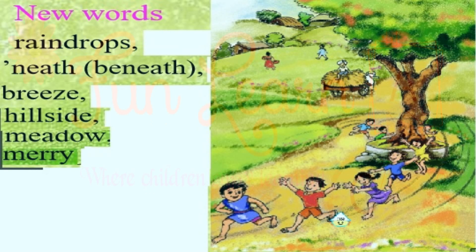New vocabulary words: 'beneath' means net or under; 'breeze' means thundi hawa (cool wind); 'hillside'; and 'meadow' — a grassy open field.